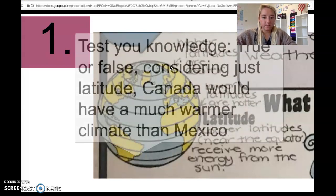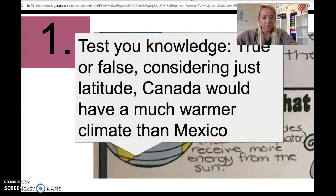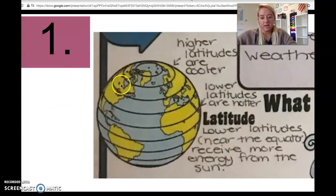Test your knowledge: true or false, considering just latitude, Canada would have a much warmer climate than Mexico. You will know that this is false. Canada will actually have a cooler climate than Mexico because Canada is up here, Mexico is down here. Mexico is closer to the equator. We just said the closer you are to the equator the warmer your climate typically is.